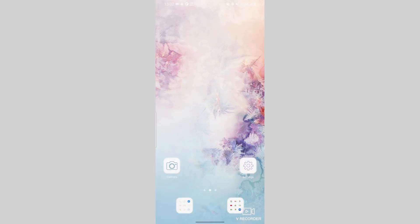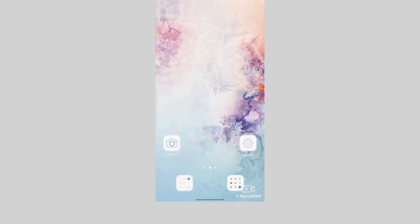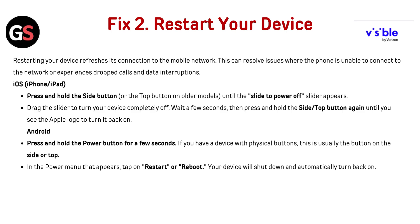For Android, press and hold the power button for a few seconds. If you have a device with physical buttons, this is usually the button on the side or top. In the power menu that appears, tap on Restart or Reboot. Your device will shut down and automatically turn back on.